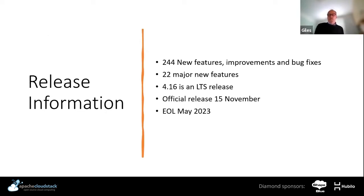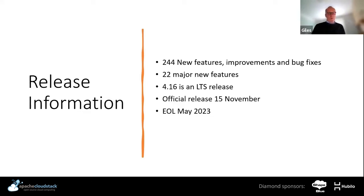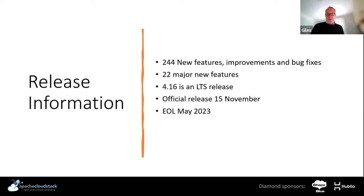This release has 244 new features, improvements, and bug fixes — 244 PRs basically in the release. Of those, 22 are major new features. 4.16 is an LTS release, which means the community informally agrees to maintain it for the next 18 months. It's actually not officially released yet. The final vote on the third release candidate is about to finish — literally today. I had a quick look before we started and there are no minus ones, so I can't see any reason that the 15th won't be the date it's actually released.